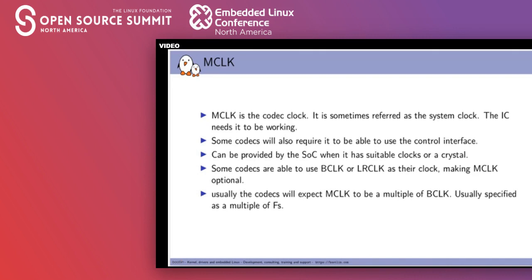MCLK can be provided by the SoC when it has that kind of output, by your system-on-module if it provides a pin with that clock, or you can use a crystal. If you don't have any of those, some codecs can use BCLK or the frame clock as their system clock, making MCLK optional. Codecs usually expect MCLK to be a multiple of BCLK, often specified as a multiple of FS — for example, MCLK should be 256×FS. Some codecs have PLLs and divisors to adjust the system clock to BCLK.